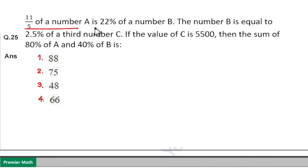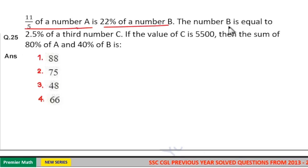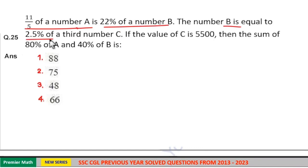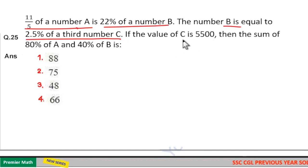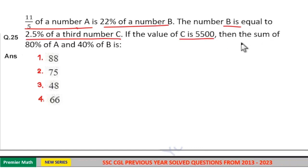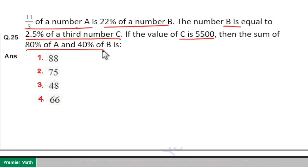11 by 5 of a number A is 22 percentage of number B. The number B is equal to 2.5 percentage of a third number C. If the value of C is 5500, then find the sum of 80 percentage of A and 40 percentage of B.